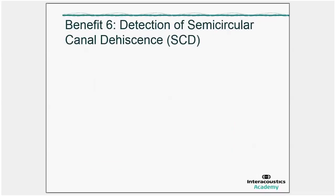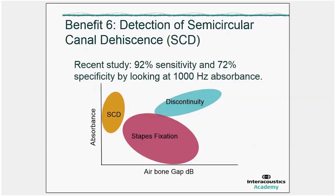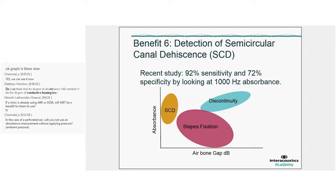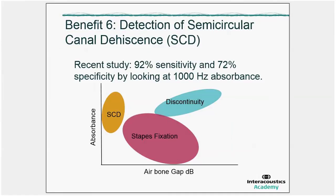Benefit number six. It's a completely different area. It's about the detection of semicircular canal dehiscence. There is a recent study done by Heidi Nakajima who indicates that by measuring absorbance, you can reach 92% sensitivity and 72% specificity for detecting semicircular canal dehiscence. And one of the graphs that she shared in one of her articles is the one shown here, which has the absorbance. The height of the absorbance as function of the air bone gap gives a very good indication if it's semicircular canal dehiscence or if it's maybe a fixation or discontinuity. We really hope to see more from Heidi Nakajima.